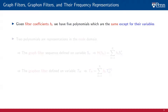Underlying this convergence analysis is the algebraic equivalency between graph filters, graphon filters, and their respective frequency representations. More formally, when we are given filter coefficients Hk, we have five different polynomials, which are all the same except that they are evaluated at different variables.